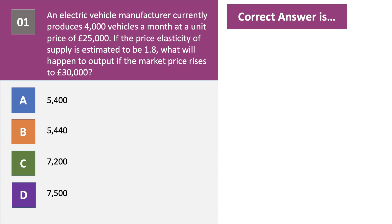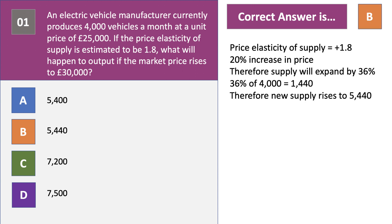Price elasticity of supply is 1.8. Market price has gone up from £25,000 to £30,000 — that's a 20% increase in price. Therefore supply will rise by 1.8 times 20%, which is 36%. 36% of 4,000 is 1,440, so the correct answer is 5,440 units.